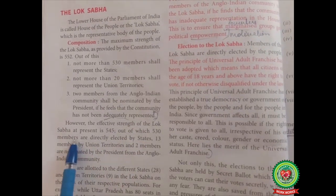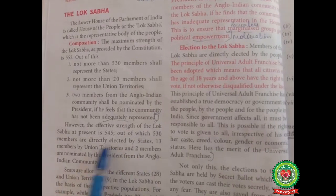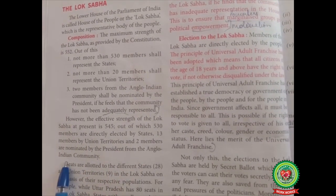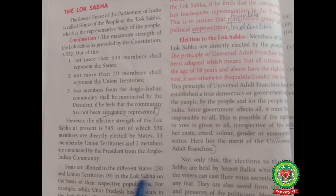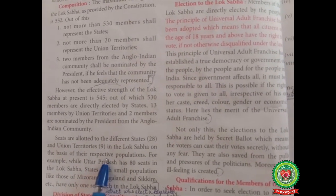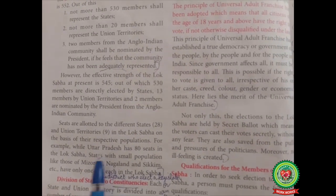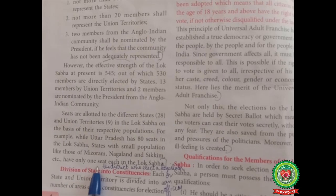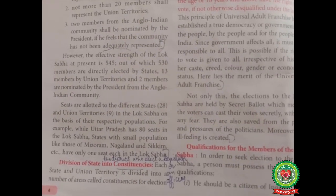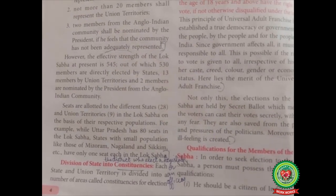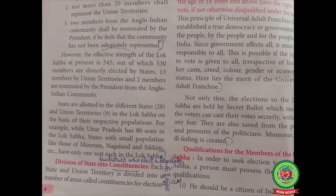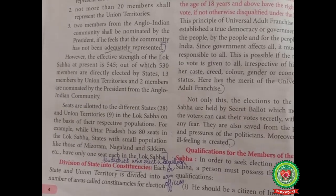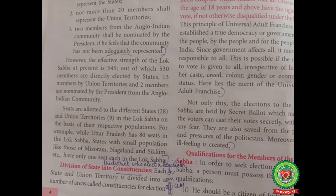However, the effective strength of the Lok Sabha at present is 545 — out of which 530 members are directly elected by states, 13 members by union territories, and 2 members nominated by the president from the Anglo-Indian community. Seats are allotted to the different states and union territories in the Lok Sabha on the basis of their respective populations. For example, while Uttar Pradesh has 80 seats, states with small populations like Mizoram, Nagaland, and Sikkim have only one seat each.